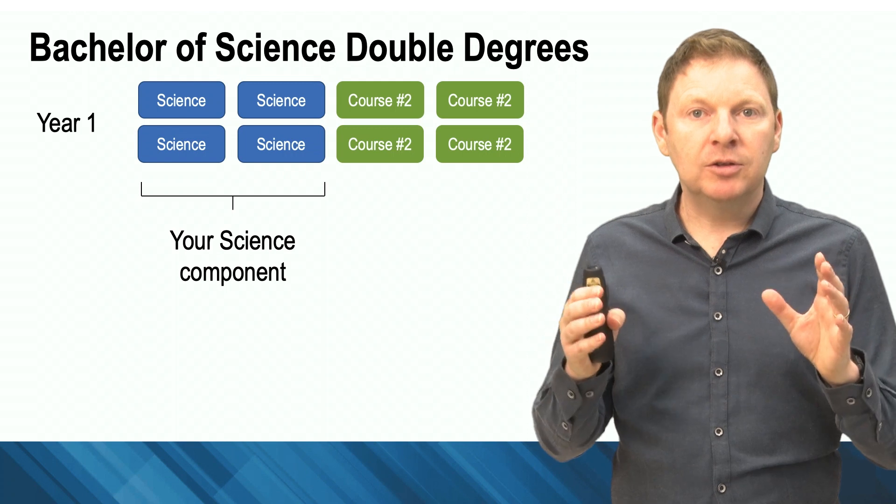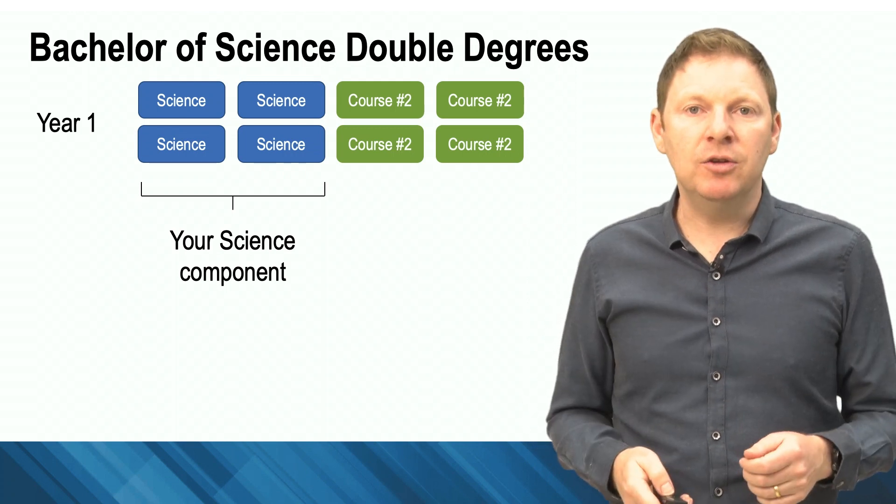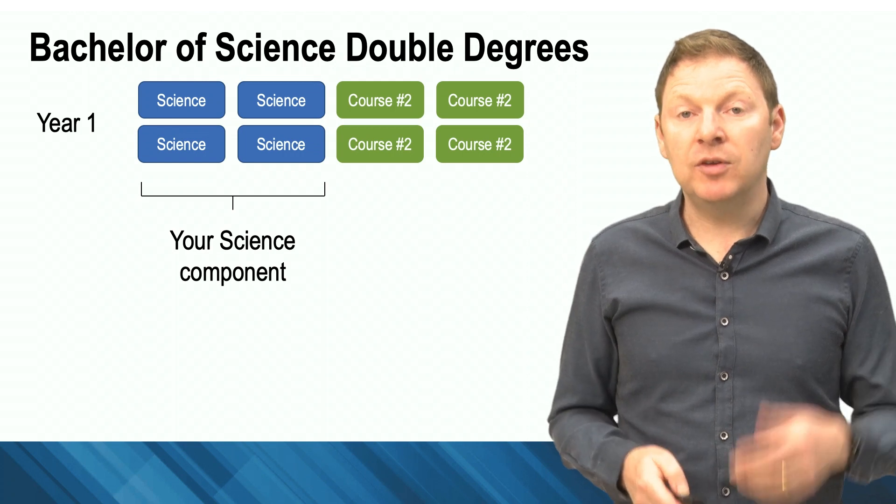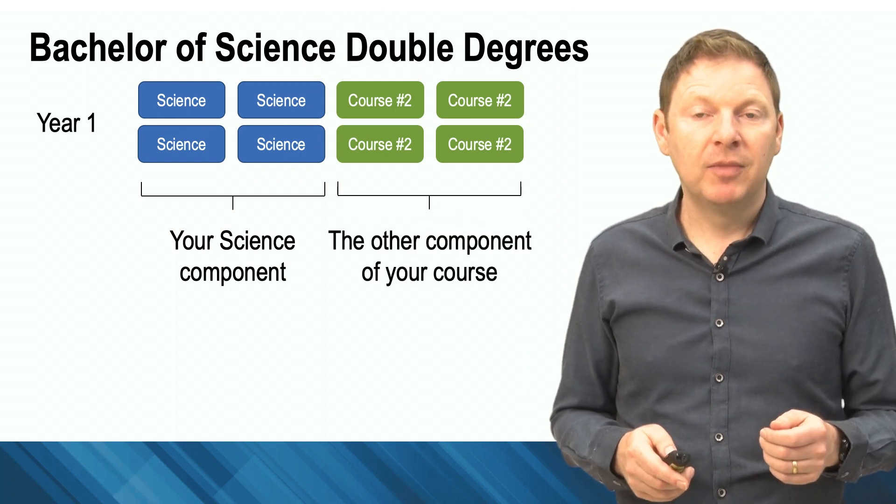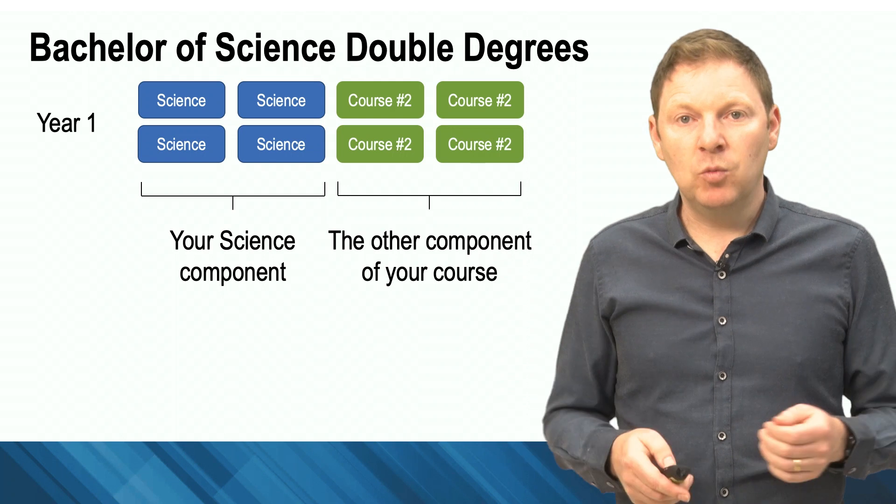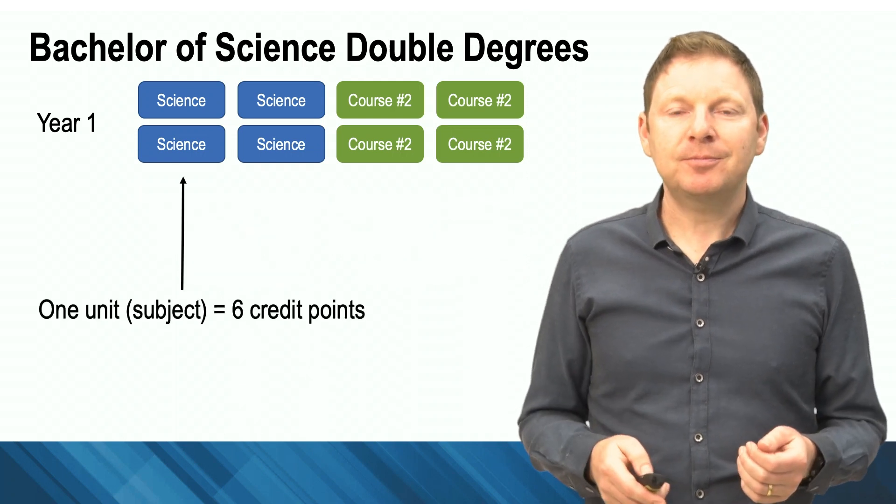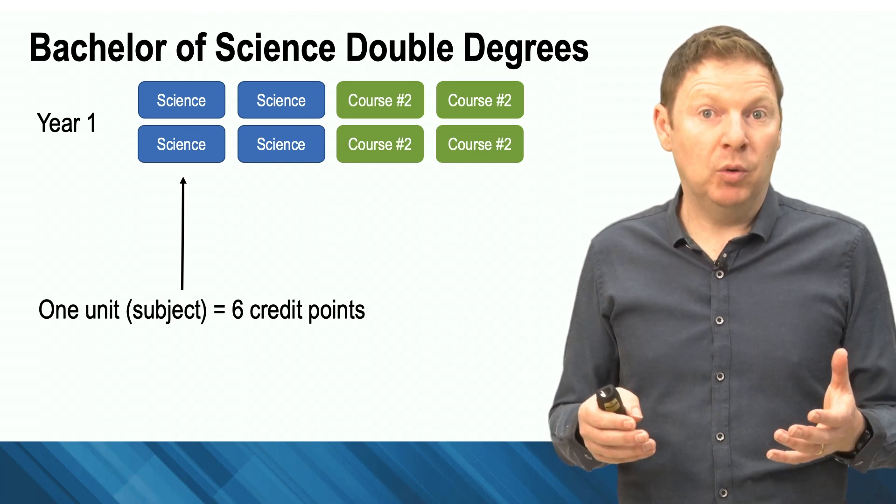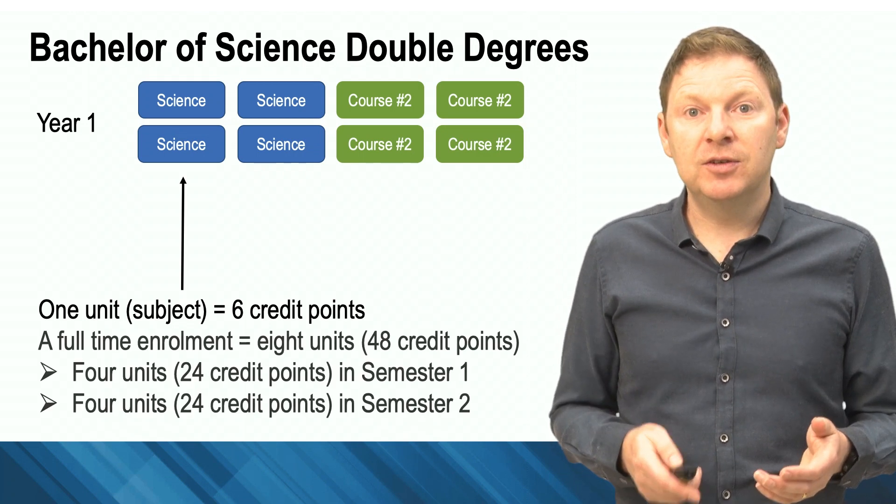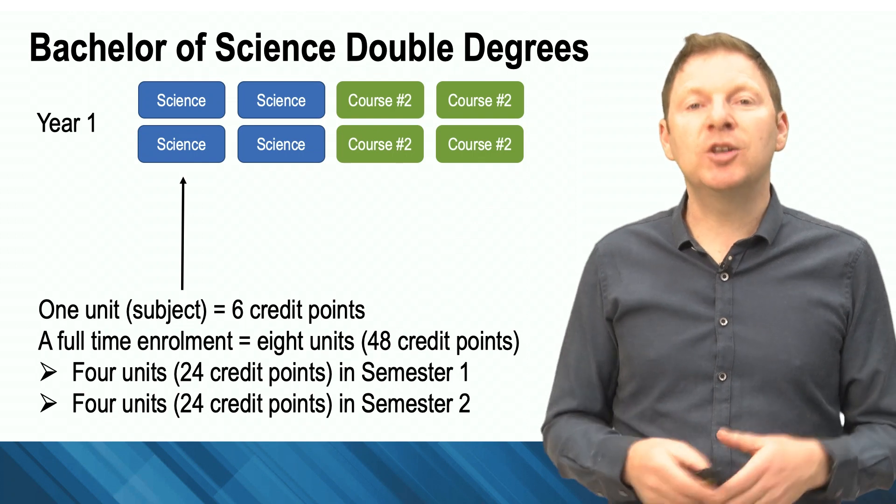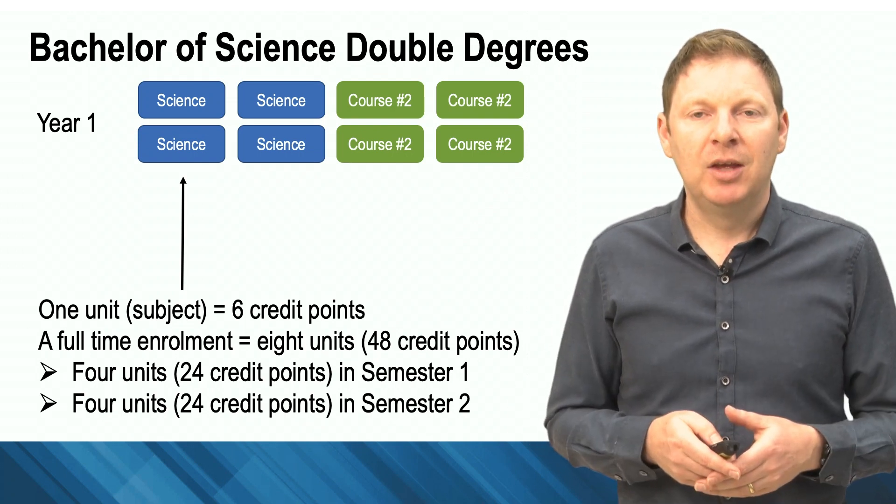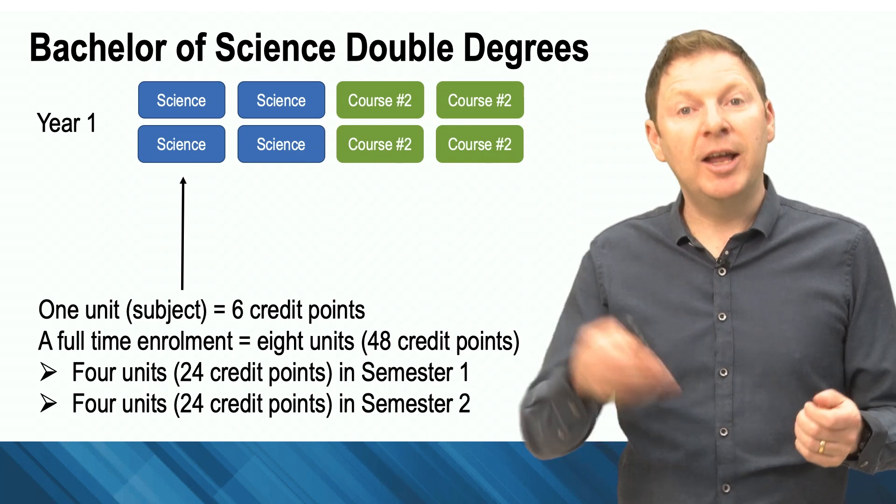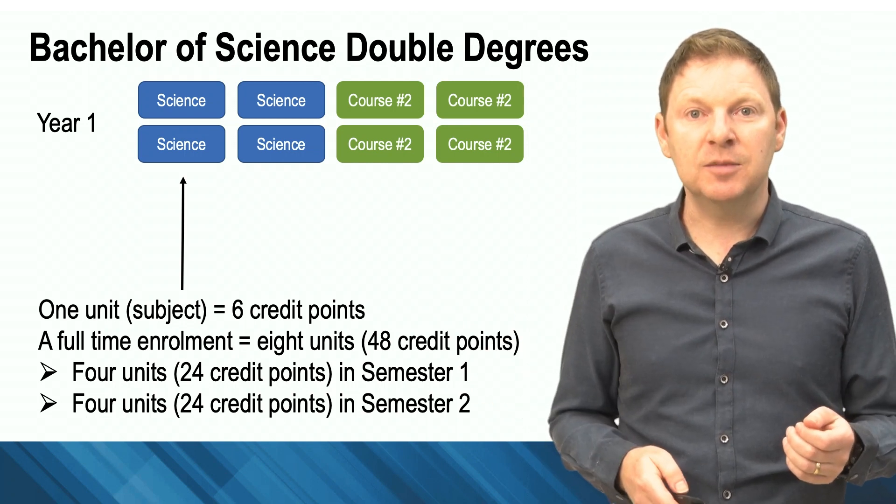In a full time load, you'll do eight units in a calendar year. So only four of these are going to be science in the first year of your course. The other four will be from whatever else it is you're studying. Now every single one of these units, as we call them, is worth six credit points. So you do the maths - six times eight, that's 48 credit points in a calendar year. We have two semesters, so you'll do 24 credit points in the first semester and 24 credit points in the second semester.